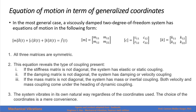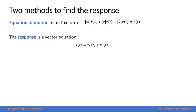The system vibrates at its own natural frequency regardless of the coordinate set that we choose to describe the motion of our system. Now that we have the equation of motion in matrix form, we want to find the response. The response will always equal the response due to the initial conditions, which is the homogeneous solution, plus the particular solution due to the external force applied. We have two different methods.